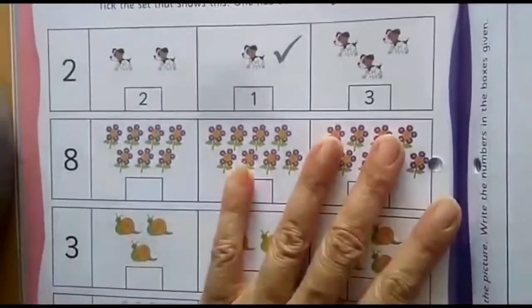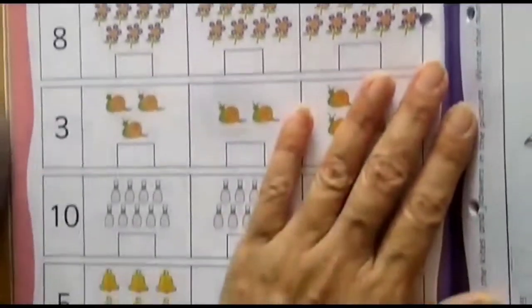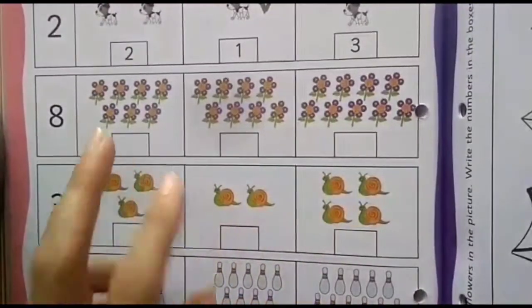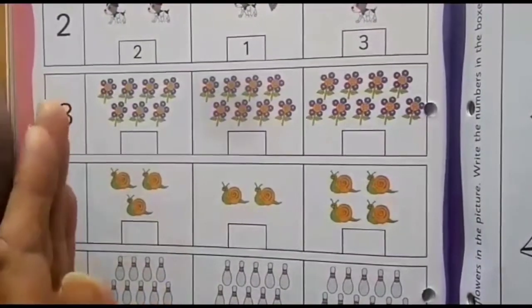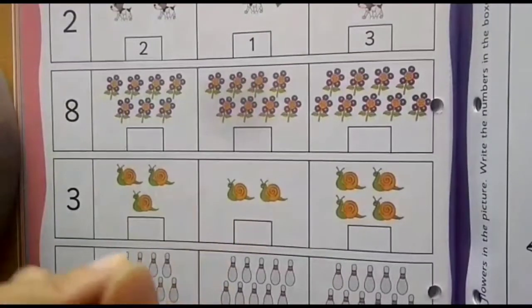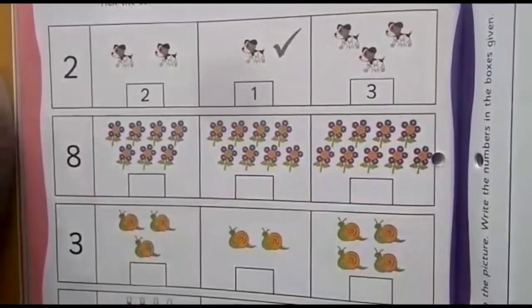First what we all need to do, we need to count the number of objects first. All the objects, whatever you can see, the pictures, and write the number in the respective box. Then we need to see which number is given on the left hand side and accordingly put the tick mark to the number which is just one less. Let's begin.